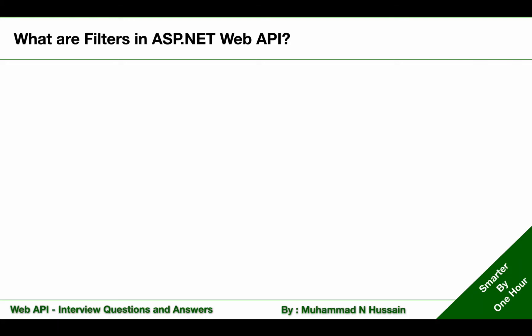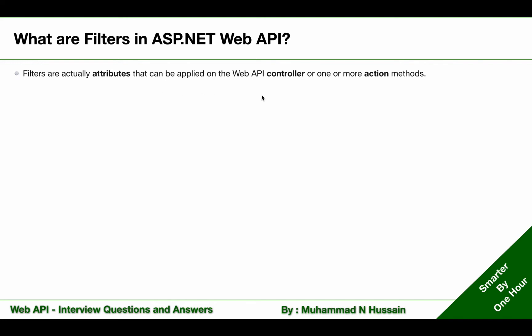What are filters in ASP.NET Web API? Filters are attributes that can be applied on the Web API controller or one or more action methods. Web API includes filters to add extra logic, and that extra logic executes before or after action method execution.